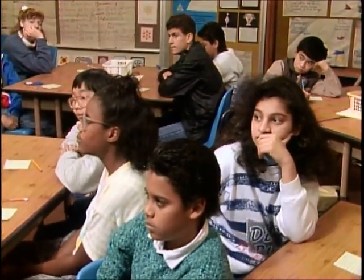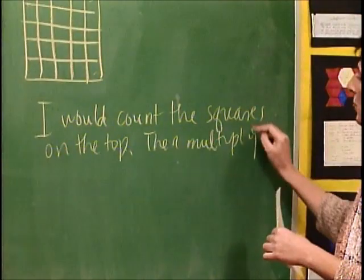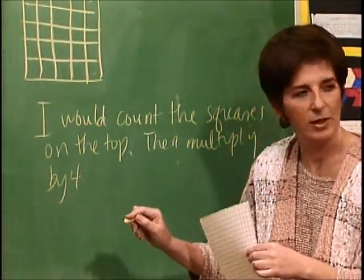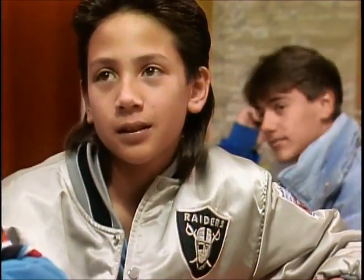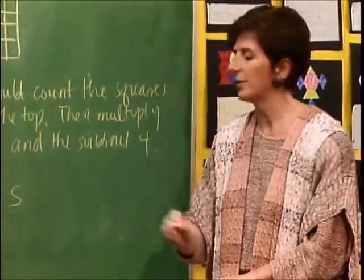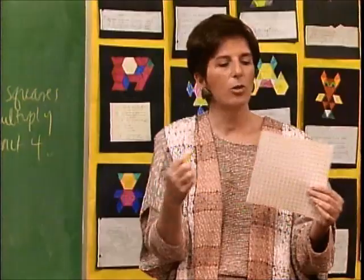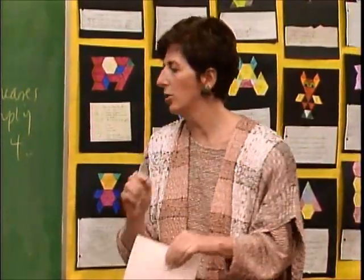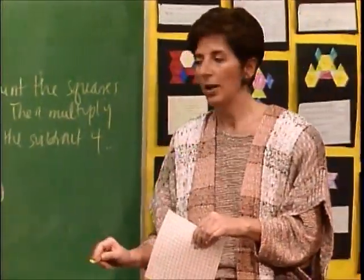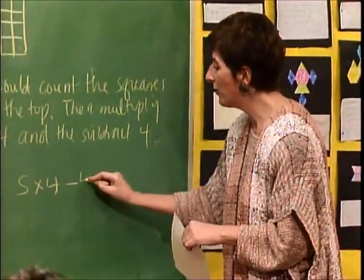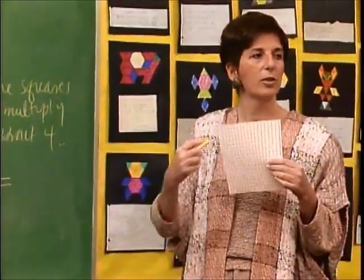After testing their methods on a 5 by 5 grid, the teacher shows the class a larger grid without telling them how many squares are on a side, and asks how they would figure out the border. Phi explains he would count the squares in the top, multiply by 4, and subtract 4 for the corners. His verbal explanation bridges to writing an algebraic formula: if s is the number of squares on a side, then the formula is s times 4 minus 4, and that tells you how many squares are around the border.